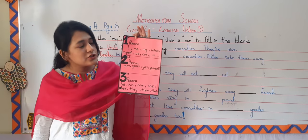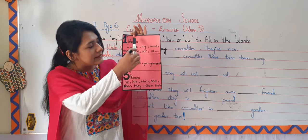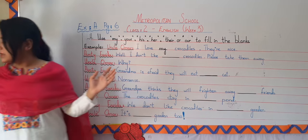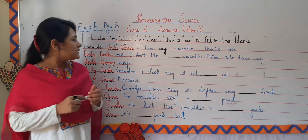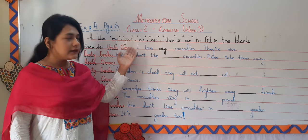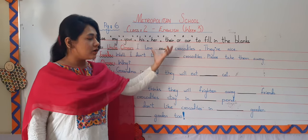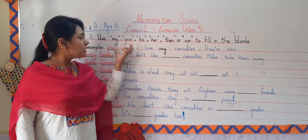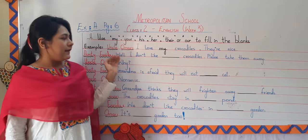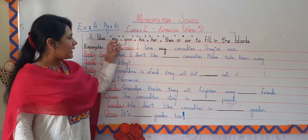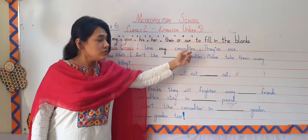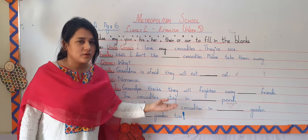Have you all listened carefully? You can clearly see it. Now we are going to use these pronouns in the exercise as well. As you can see, example number one is done in front of you. Uncle Umar is saying, 'I love my crocodiles,' because the crocodiles are Uncle Umar's possession. They are his crocodiles. So let me clarify — my, your, his, her, their, and our are the pronouns we are going to use in this exercise. Let's begin.